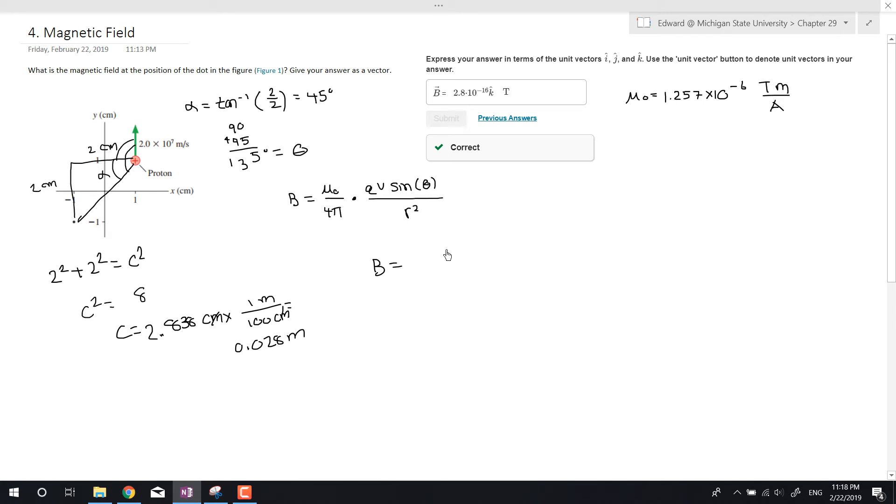So now if we plug it in, we got B is equal to 1.257 times 10 to the negative 6 tesla meter amp. Multiply that by the charge Q, which is a proton, so that's like an electron but positive. So 1.6 times 10 to the negative 19 coulombs. And the velocity, it's given to us as 2 times 10 to the 7 meters per second. And we have sine of 135 degrees.